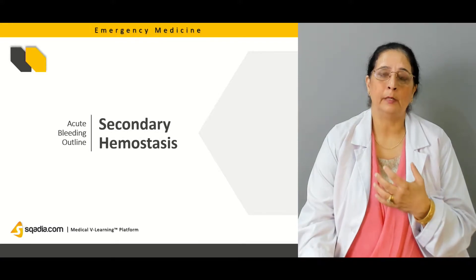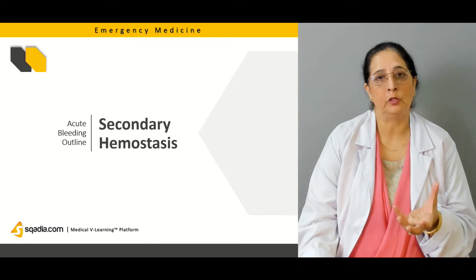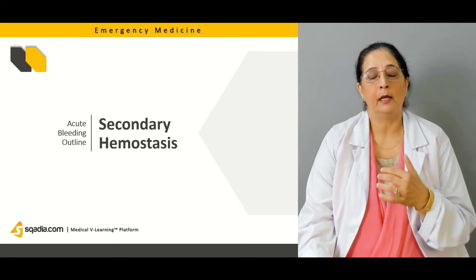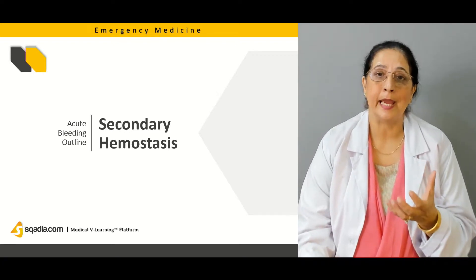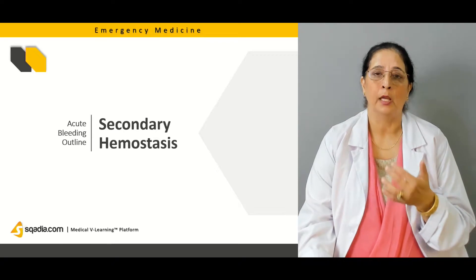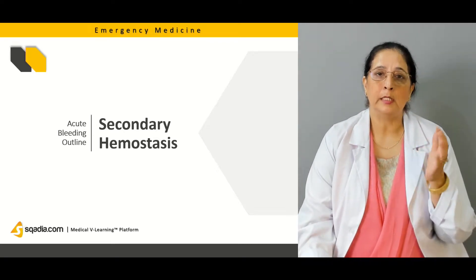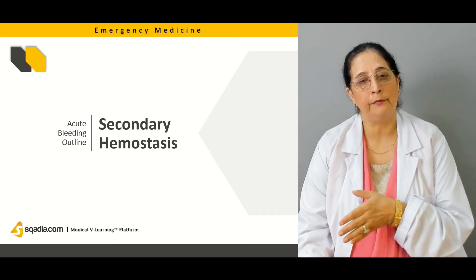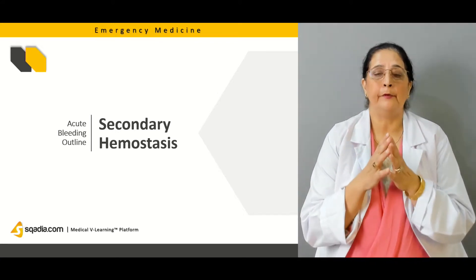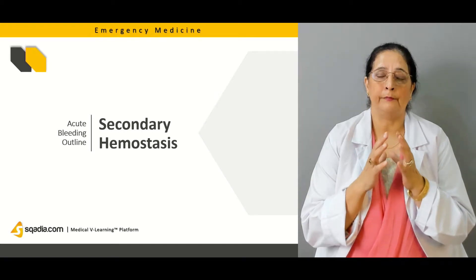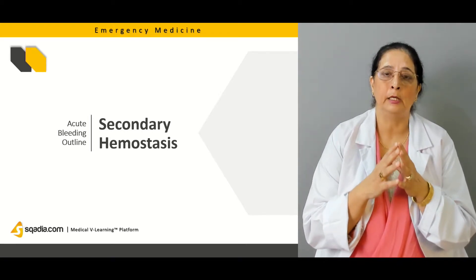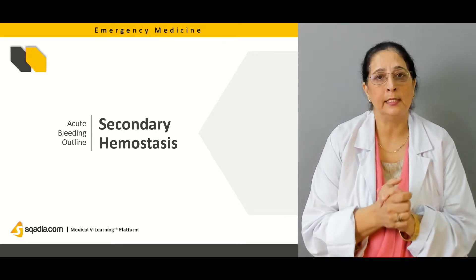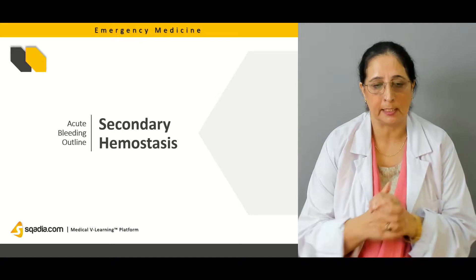Next we will talk about the secondary hemostasis, in which the coagulation cascade plays an important role, where thrombin causes the conversion of fibrinogen to fibrin. These fibrin fibers help in the formation of the platelet plug, so we will talk about that in the secondary hemostasis.